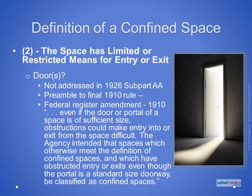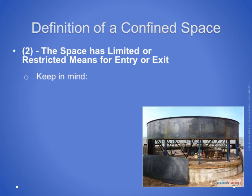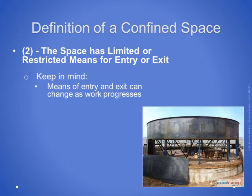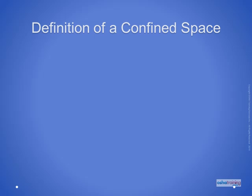In other words, a space with a standard doorway would be considered to have a limited means of entry or exit if, inside that space, there are pipes, ductwork, equipment, or other obstructions that would make it difficult for a worker to escape in an emergency. Also keep in mind that a structure under construction may not have a limited means of entry or exit initially, but may become limited later. For example, employees can easily walk into and out of a large steel storage tank under construction because some large steel panels were left out at ground level. However, once the lower panels are all installed and employees must enter and exit through a portal or through the top, a limited means of entry or exit would exist.